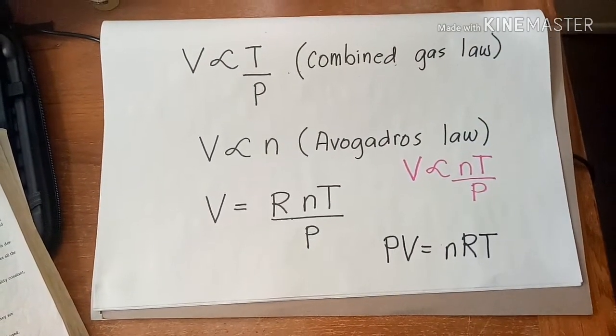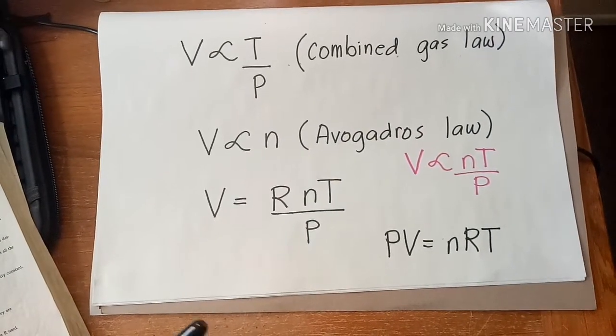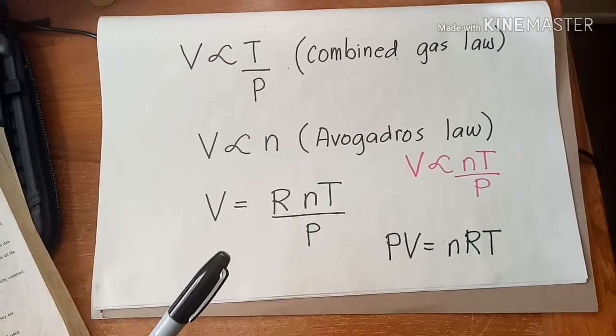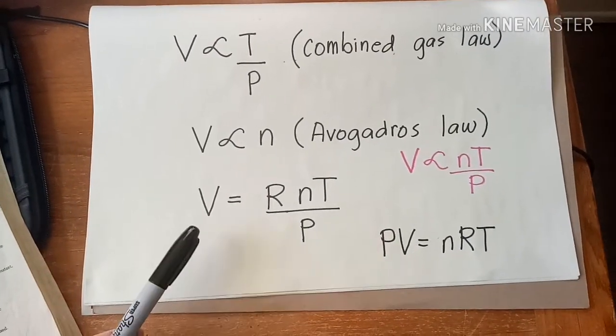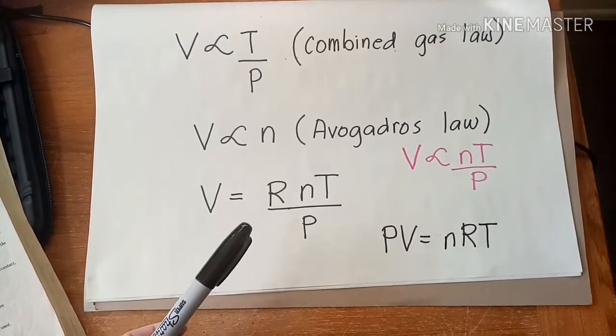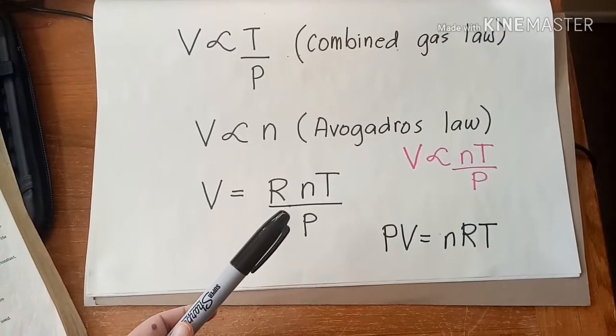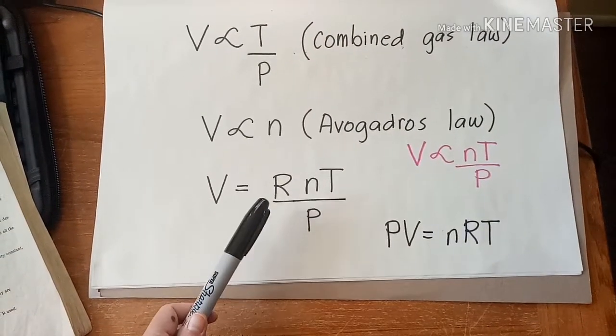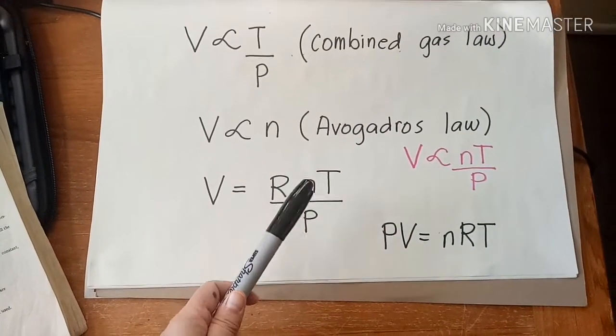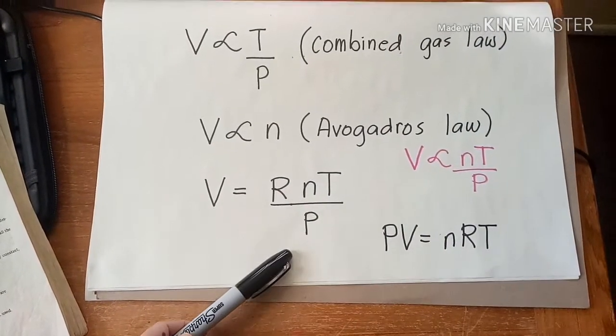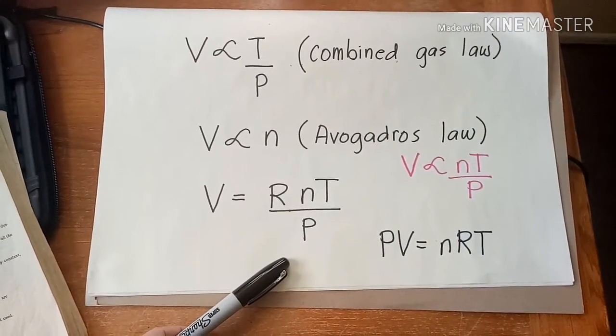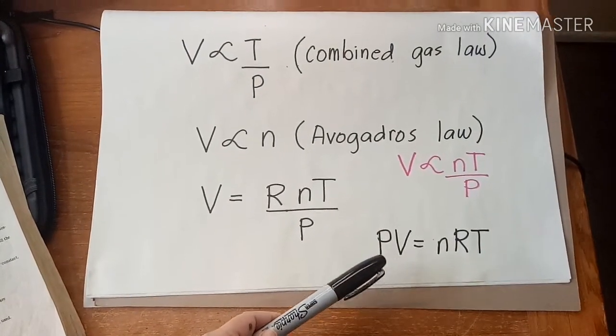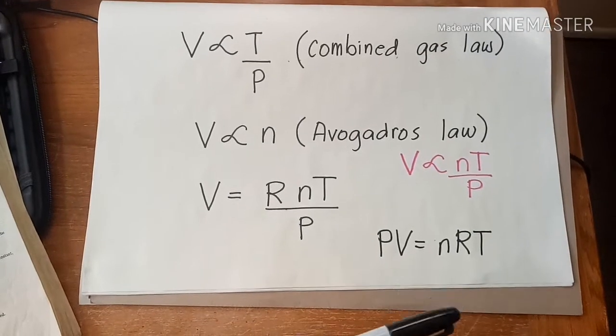This expression is changed to an equation by introducing a proportionality constant R, known as the gas constant. Therefore, our equation will become V equals R times n times T over P, or volume equals gas constant times the number of moles times temperature divided by pressure. And this is also the more common form of the equation, PV equals nRT.